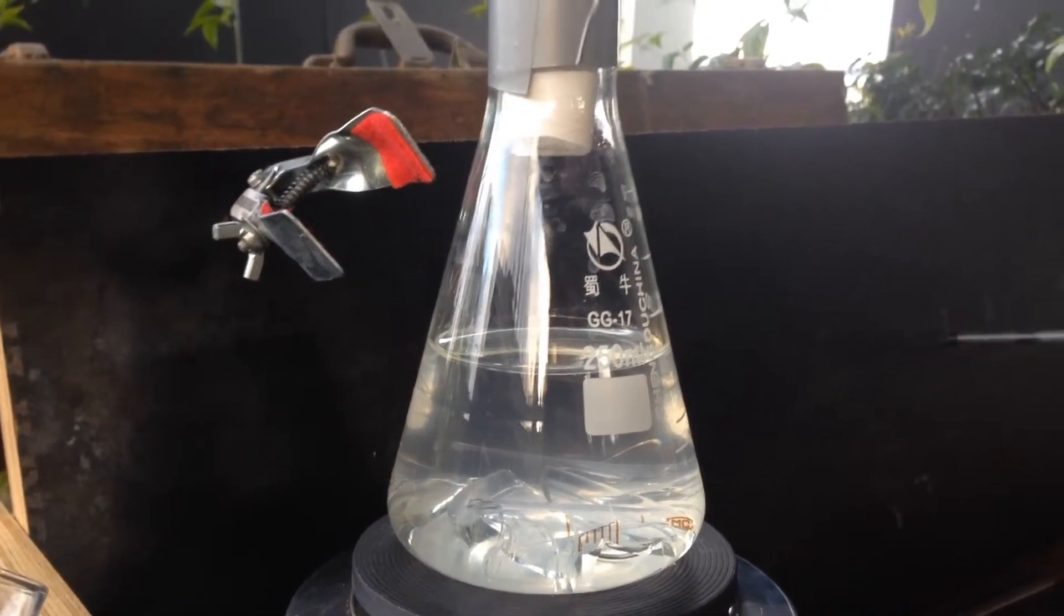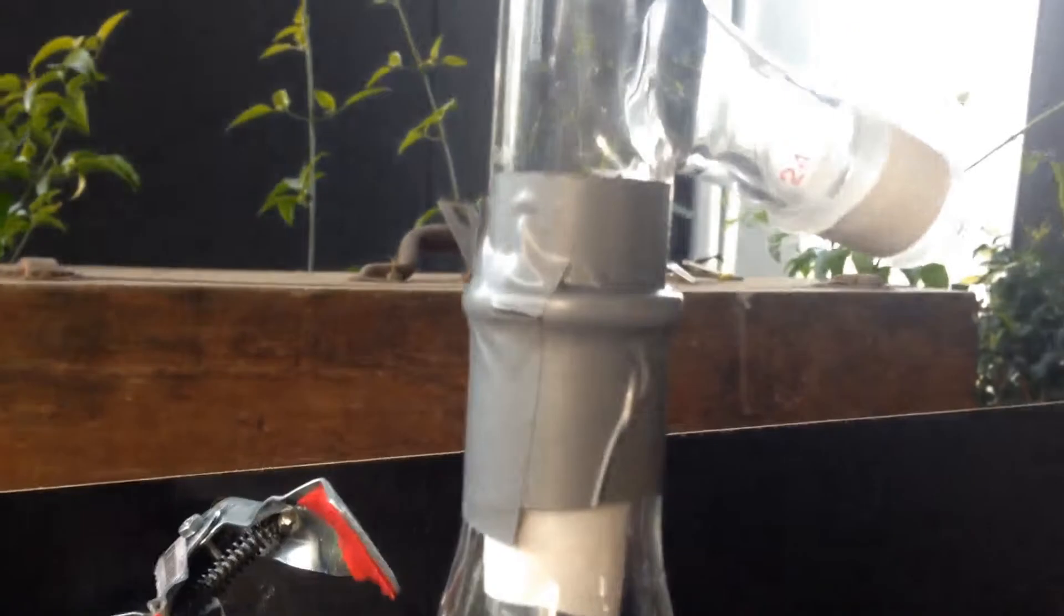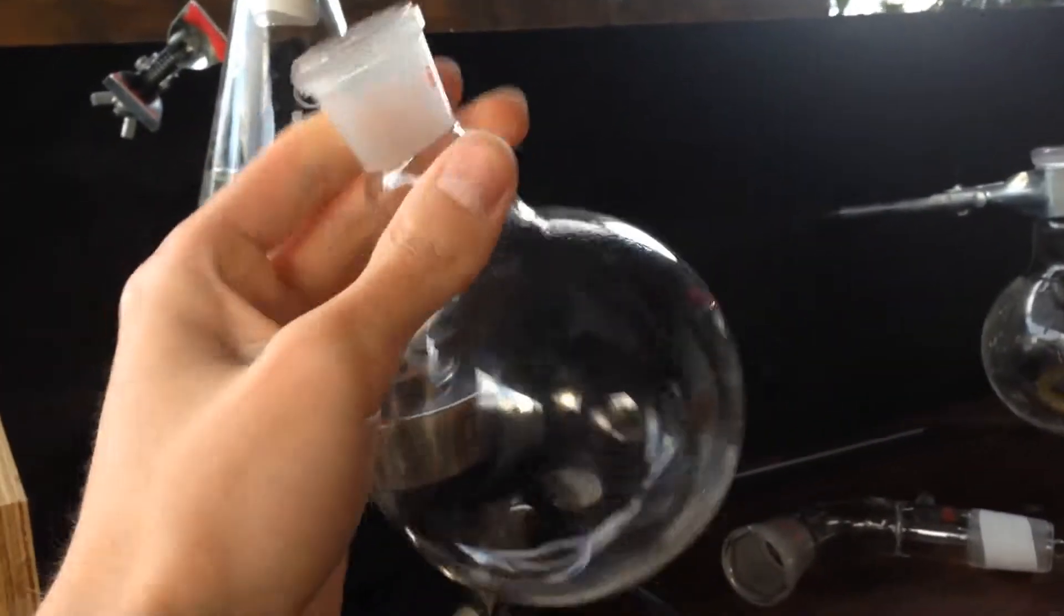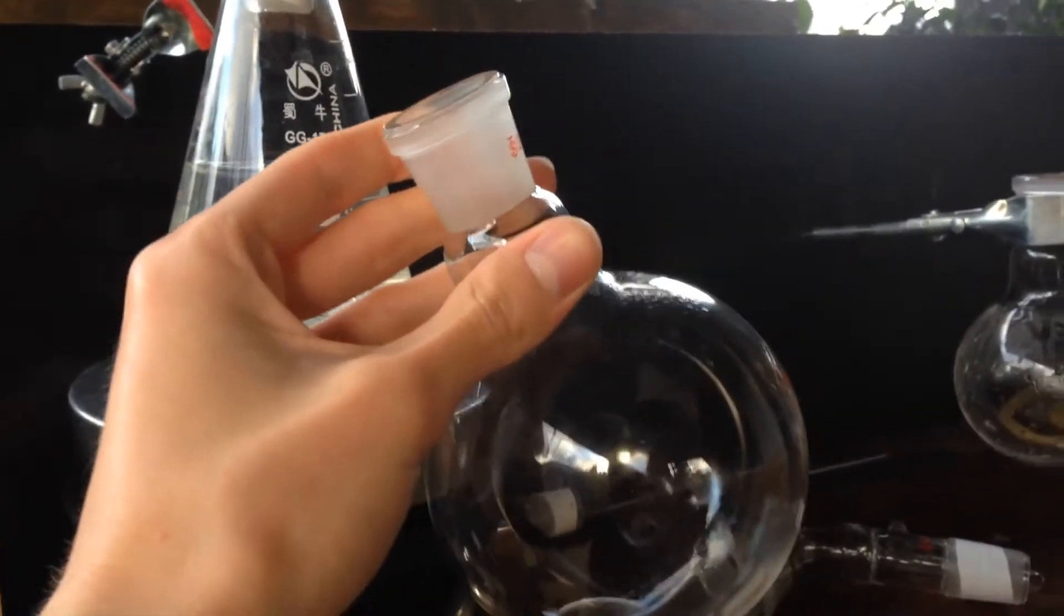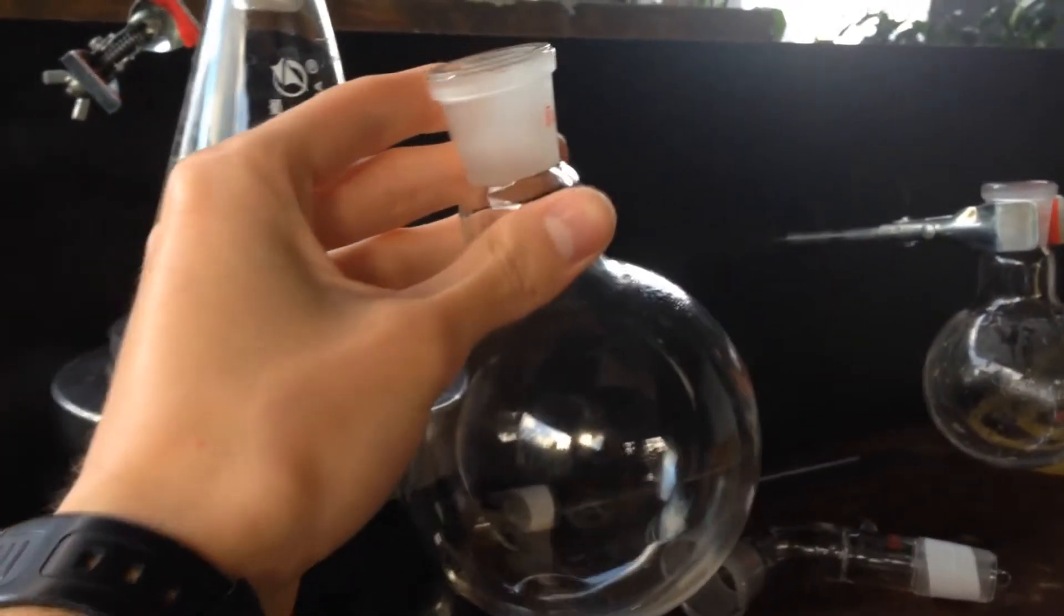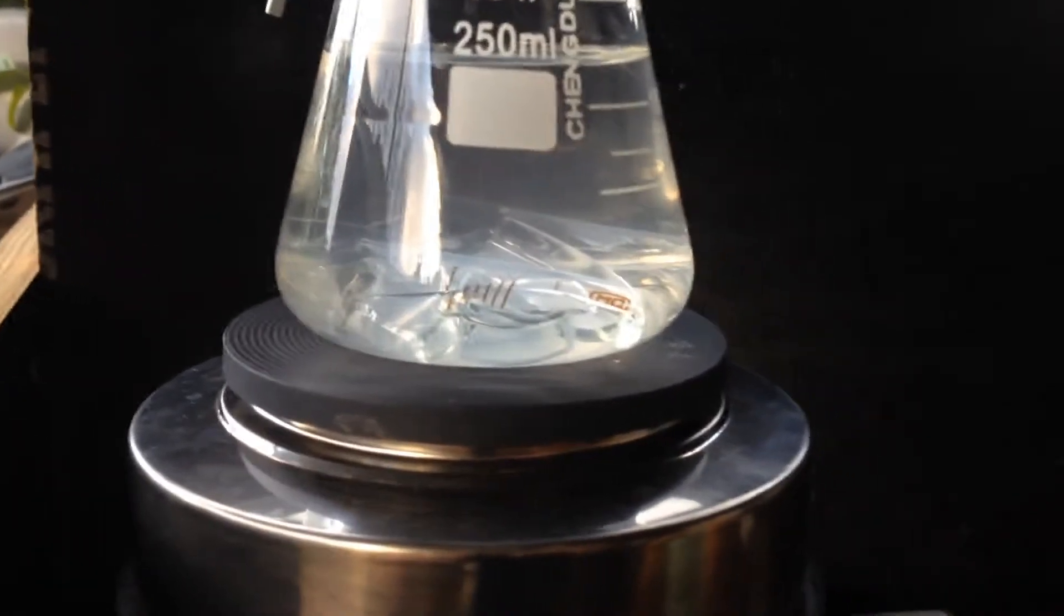In order to connect up the Erlenmeyer flask to the distillation setup, because it doesn't actually have an attachment that attaches onto these pieces, I've just duct taped it on. So originally, the distillation set came with this 500ml round bottom flask, but currently I don't really have a way to put it in a sand bath or an oil bath, so I'm just using an Erlenmeyer flask because I can get a lot more surface area touching the hot plate.